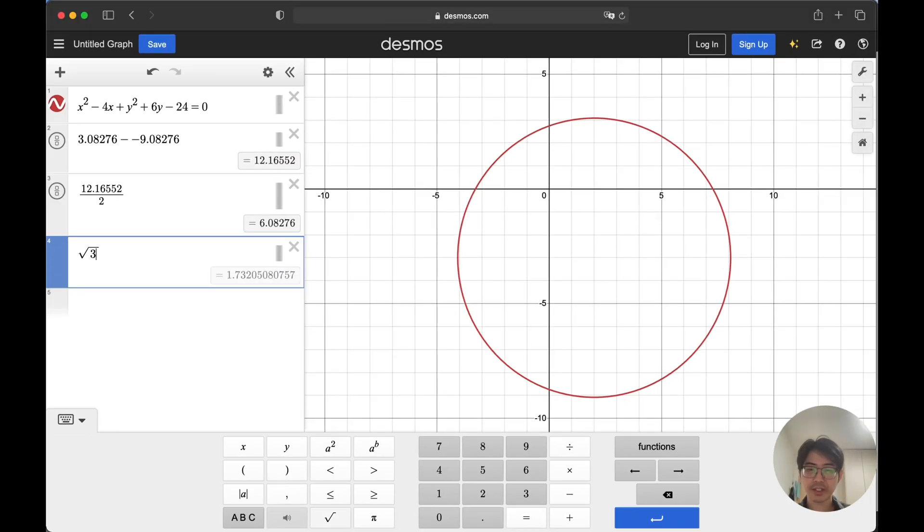Root 37. You see, if it is converted into decimal form, it's also 6.08 something, which is very close to our radius. And that is the answer for the radius.